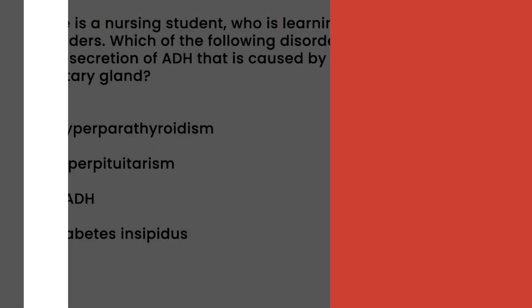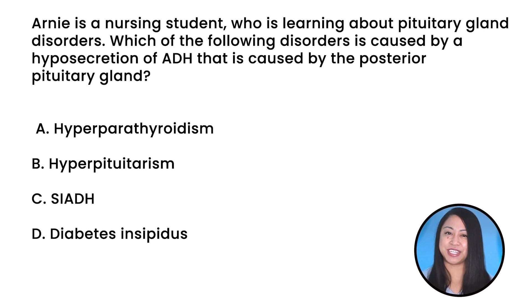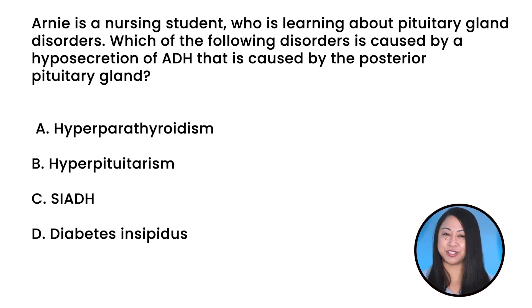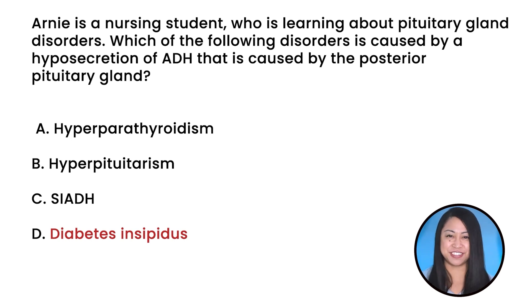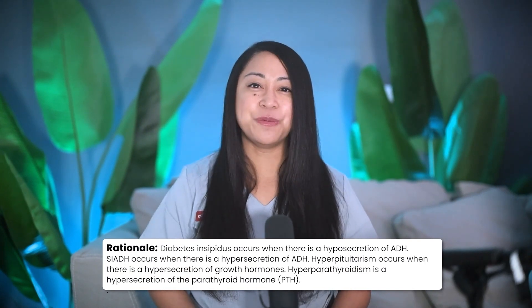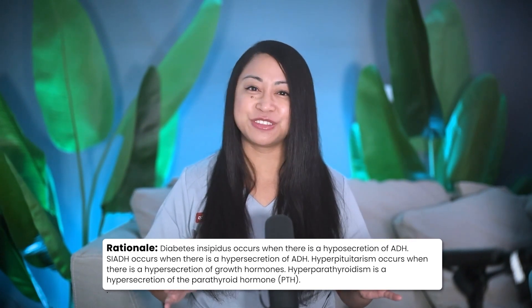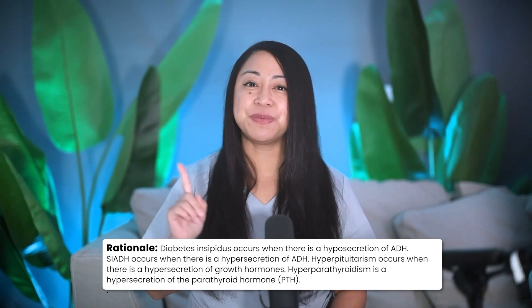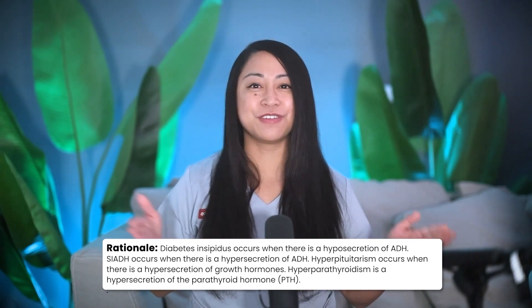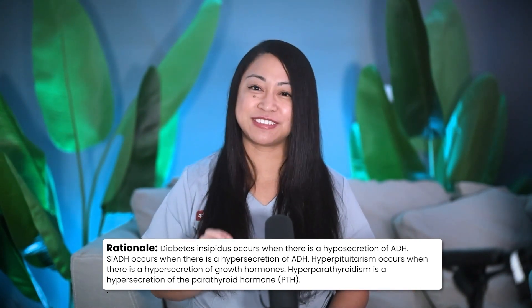Quick NCLEX pop quiz! Arnie is a nursing student learning about pituitary gland disorders. Which of the following disorders is caused by hyposecretion of ADH from the posterior pituitary gland? A: Hyperparathyroidism, B: Hyperpituitarism, C: SIADH, or D: Diabetes insipidus. And the correct answer is D, Diabetes insipidus. Diabetes insipidus occurs when there is hyposecretion of ADH. SIADH occurs when there is hypersecretion of ADH. Hyperpituitarism occurs when there is hypersecretion of growth hormone. Hyperparathyroidism is a hypersecretion of parathyroid hormone, abbreviated to PTH.